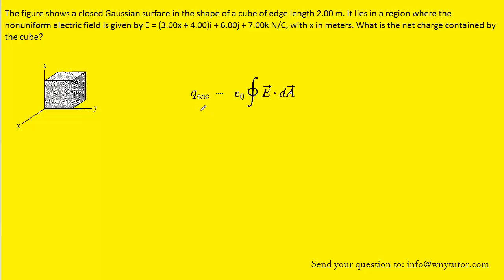Gauss's Law tells us that the amount of charge enclosed inside of this Gaussian surface will equal an integral, where we have a constant on the outside, and inside the integral we have the dot product between the electric field vector and the so-called dA vector.